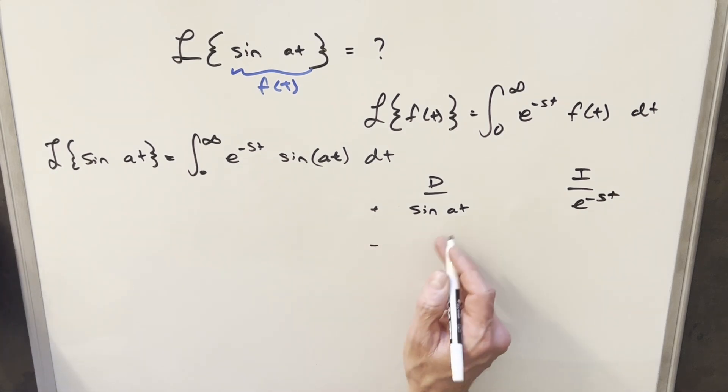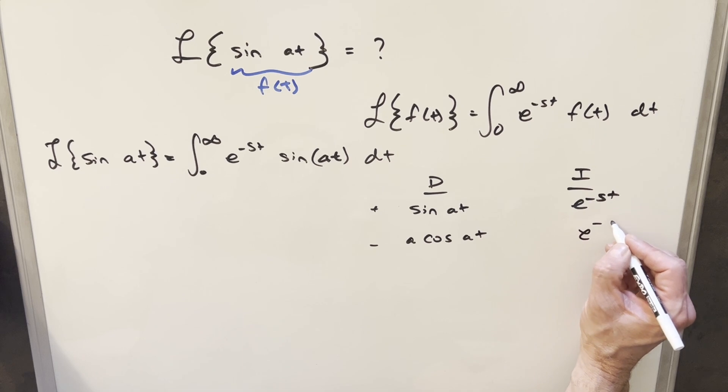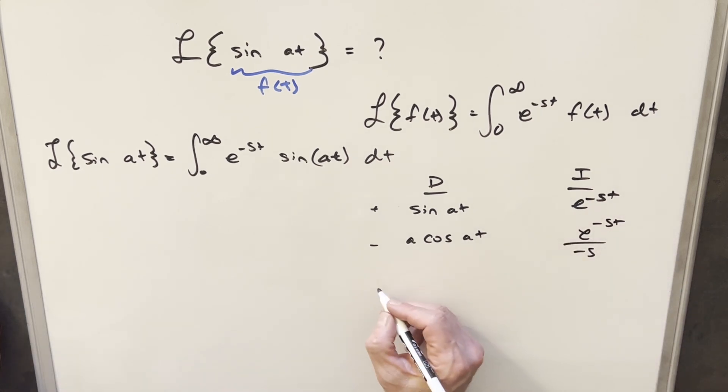So like first, when I differentiate here, this is going to give me a cosine at. And then here, integrating e minus st, this is going to give me e to the minus st over minus s. Then we'll just do it again.